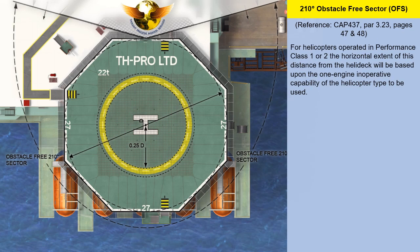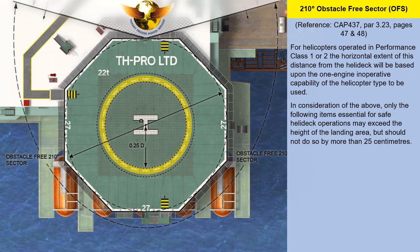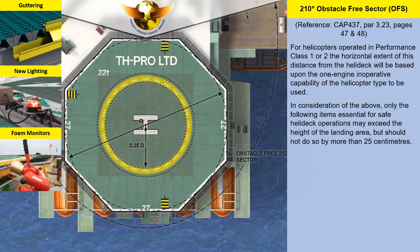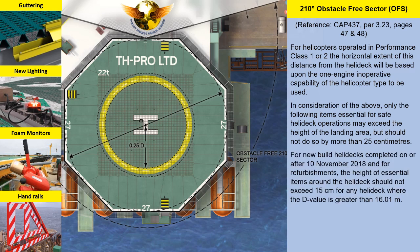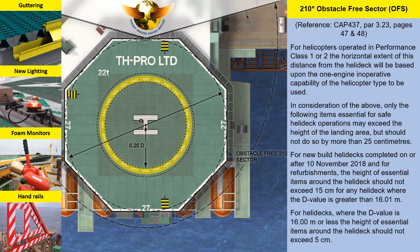For helicopters operated in performance class 1 or 2, the horizontal extent of this distance from the helideck will be based on the one-engine inoperative capability of the helicopter type to be used. Only items essential for safe helideck operations may exceed the height of the landing area, but should not do so by more than 25 centimeters. For new-build helidecks completed on or after 10 November 2018, and for refurbishments, the height of essential items should not exceed 15 centimeters for any helideck where the D-Value is greater than 16.01 meters. For helidecks where the D-Value is 16.0 meters or less, the height of essential items should not exceed 5 centimeters.